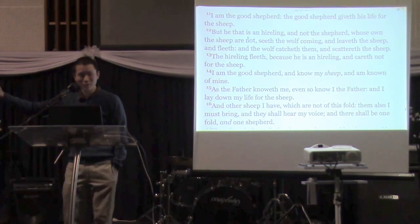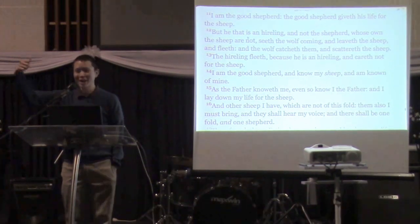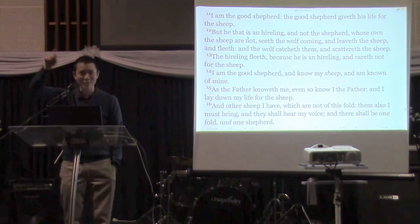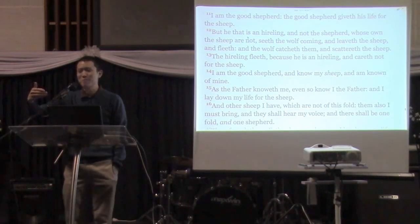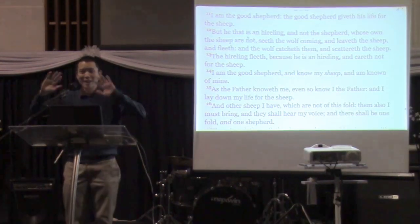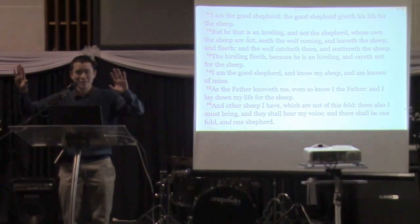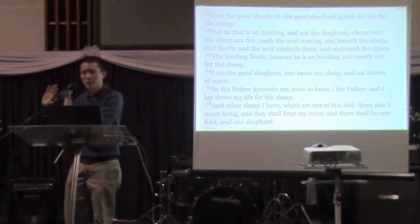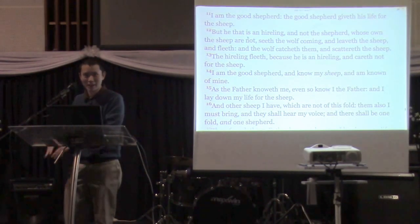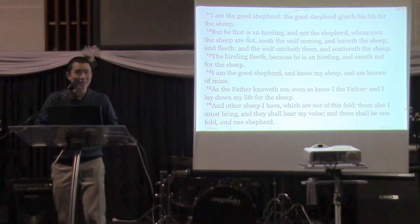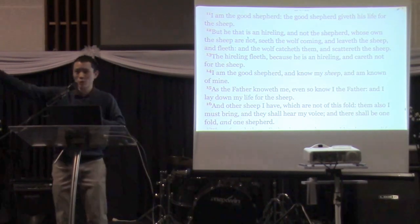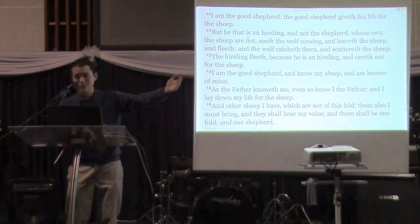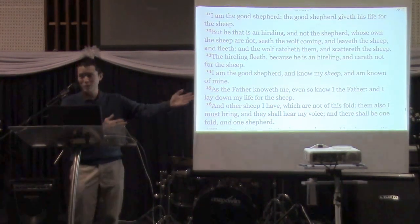So everyone votes above the line. The way it used to work — when you put a one above the line, you'd just have to put a one in the party you wanted to vote for. Every party has their official preferences. So if you voted one for Family First, Family First as a party has decided that if they don't win, this is who will get the vote, and if they don't win, this is who will get the vote. That's what preferencing is.